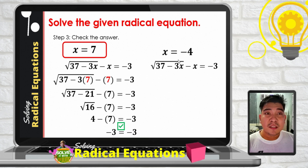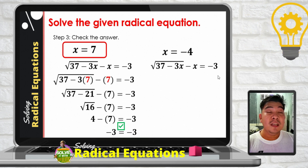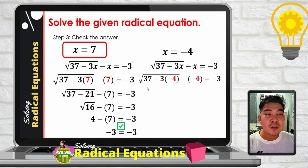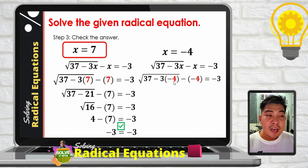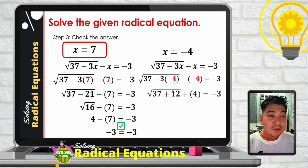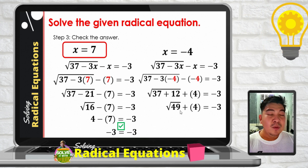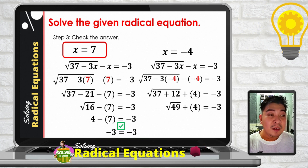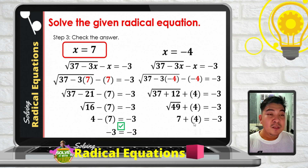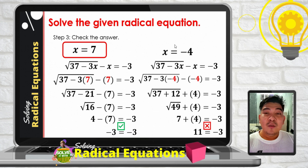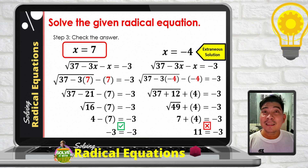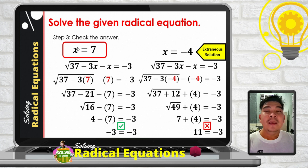Now checking x equals negative 4: substituting into the original equation, negative 3 times negative 4 is positive 12; 37 plus 12 is 49, giving square root of 49 plus 4 equals 7 plus 4 equals 11. Since 11 is not equal to negative 3, x equals negative 4 is an extraneous solution. Therefore the only solution for this example is x equals 7.